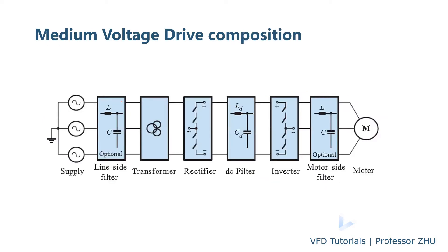This is a typical composition of a medium voltage drive. We have the rectifier, which converts AC to DC, and DC filter which uses a capacitor or reactor. Then the inverter, DC to AC. And sometimes on the motor side you have a filter. Also, most of the medium voltage drive you have a transformer in the input side, and sometimes you need a line-side filter. And here is the power supply.